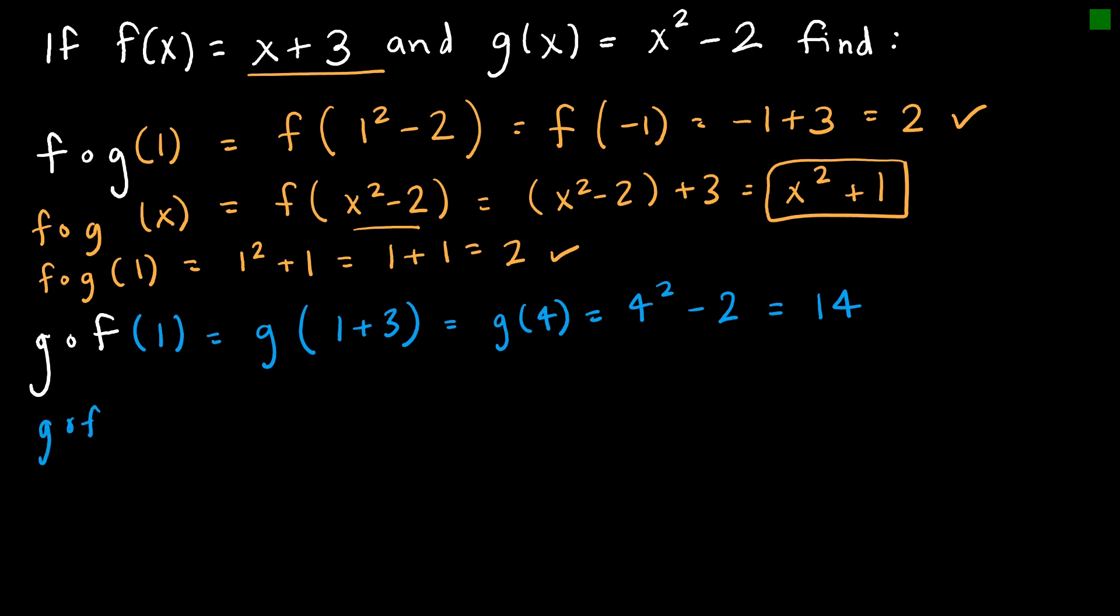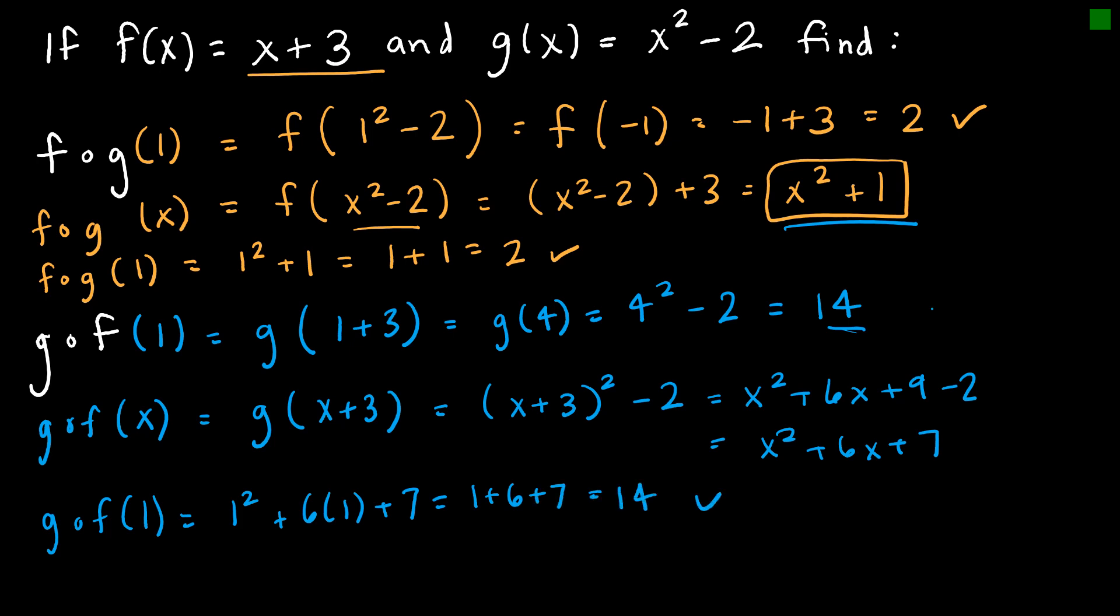So now let's take a look at G of F of X instead and see if we can come up with a function like we did for F of G of X where we can just plug in the value instead of having to go through all of the steps. So I want to do G of X plus 3, which means my X is now X plus 3. So X squared minus 2 looks like this. So I can leave it like this or I could foil this out. X squared plus 6X plus 9 minus 2, which is running out of room over here, X squared plus 6X plus 7. Let's check our work. G of F of 1, which we already know should be 14. Let's see if we get that again. 1 squared plus 6 times 1 plus 7 would be 1 plus 6 plus 7, which is 14. And so it checks out.